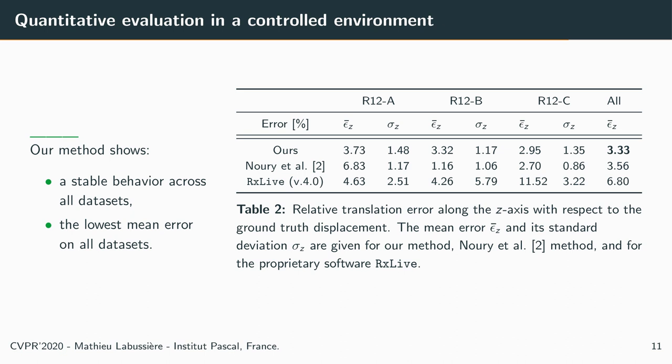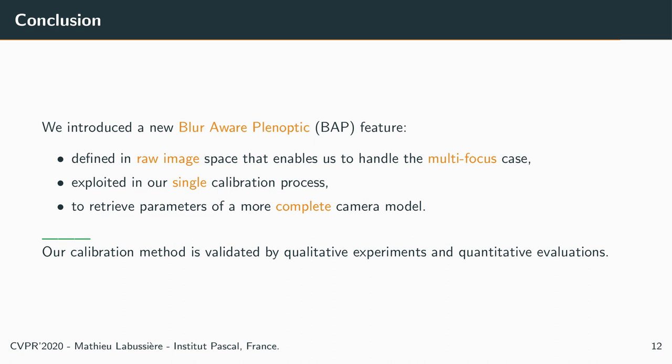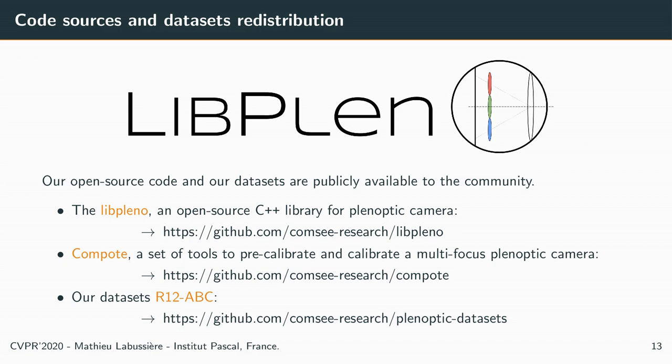To conclude, we introduce a new blur-aware plenoptic feature defined in raw image space that enables us to handle the multi-focus case, and can be exploited in our single calibration process to retrieve parameters of a more complete camera model. Our calibration method is validated by qualitative and quantitative evaluation. Furthermore, our open-source code and dataset are publicly available on GitHub. We developed libpleno, an open-source C++ library for plenoptic cameras, along with COMPOT, a set of tools to pre-calibrate and calibrate a multi-focus plenoptic camera.